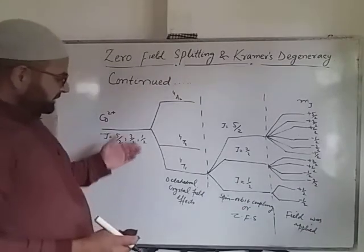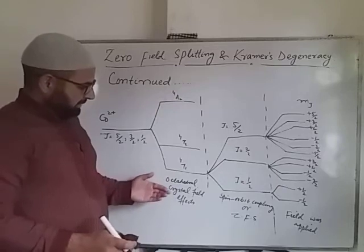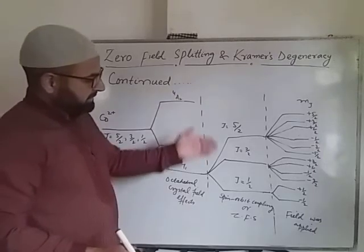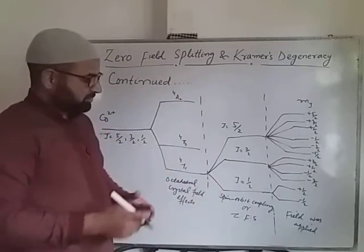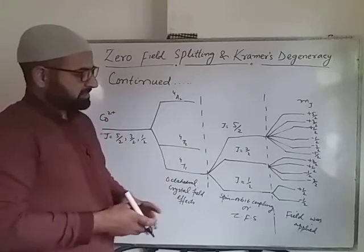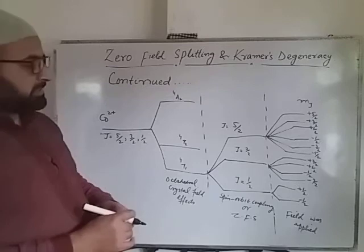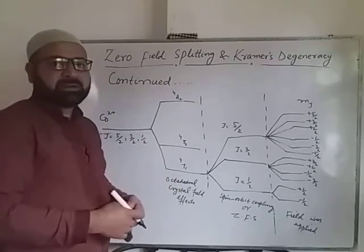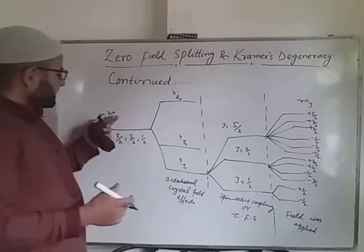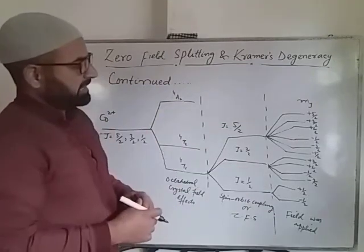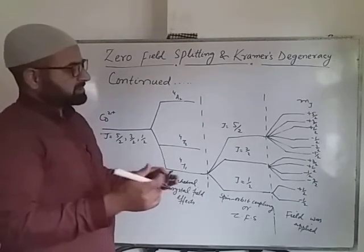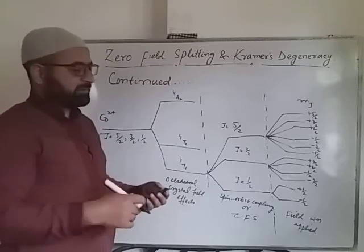So from here you can see: firstly, crystal field effects came into play and lifted the degeneracy of the d-orbitals; then to lift degeneracy of the spin states, spin-orbit coupling or zero field splitting came into play; and then when the field was applied, they further separated into singly degenerate spin states — making the whole EPR spectrum more complicated. The hyperfine splitting can further complicate the EPR spectrum if the metal ion has a nuclear system that interacts with each of these mJ values.